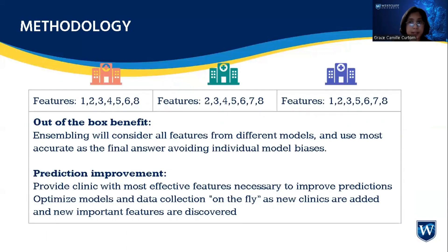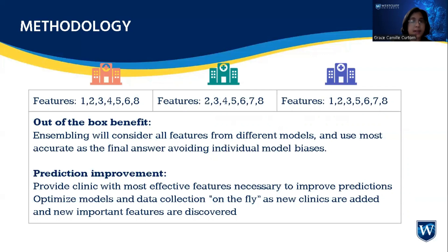Here we have different clinics colored in pink, green, and blue. Clinic A studies features 1, 2, 3, 4, 5, 6, and 8. Clinic B studies features 2, 3, 4, 5, 6, 7, and 8. Why do they have different features, you may ask? Because they use different AI models, and so they may have gathered different features.